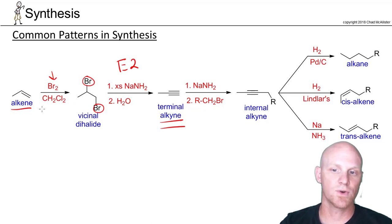And we pull that off with Br2 and our inert solvent like either CH2Cl2 dichloromethane or CCl4 carbon tetrachloride. And in this case, once you've got that vicinal dihalide, you can do E2 elimination by using excess sodium amide followed by water, and we'll do E2 elimination to form that triple bond.